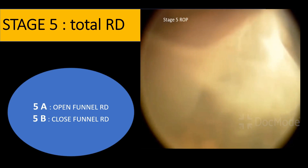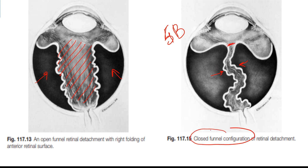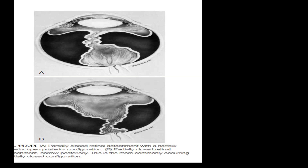In stage five we have complete or total retinal detachment. Previously stage five was classified into five A, called an open funnel RD, and five B, called a closed funnel RD. In the open funnel picture the funnel is slightly open although the retina is totally detached from the retinal pigment epithelium. In stage five B, the retina is totally contracted and the funnel is totally closed — a closed funnel configuration. The funnel can also be partially open: posteriorly open and anteriorly closed, or anteriorly open and posteriorly closed.